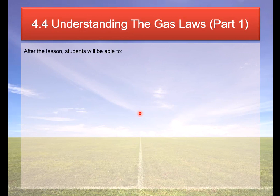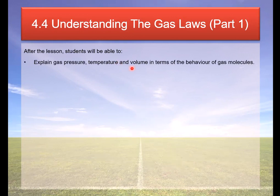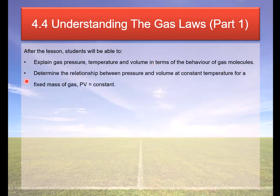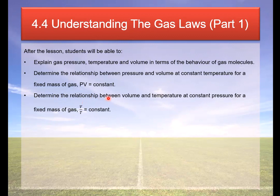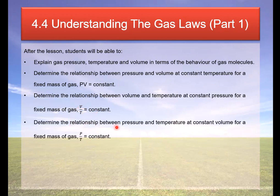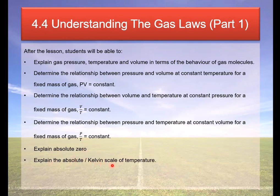So at the end of this video, you'll be able to explain gas pressure, temperature, and volume in terms of behavior of the gas molecules. We will be able to determine the relationship between pressure and volume at constant temperature for a fixed mass of gas, given by PV equals to constant. We'll be able to determine the relationship between volume and temperature at constant pressure for a fixed mass of gas, which is V over T equals to constant. Determine the relationship between pressure and temperature at a constant volume for a fixed mass of gas, P over T equals to constant. And explain absolute zero, absolute or Kelvin scale of temperature.